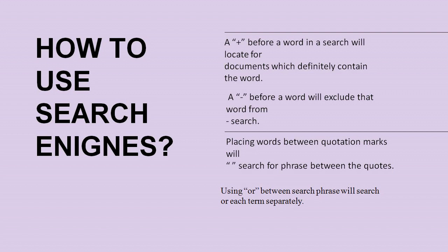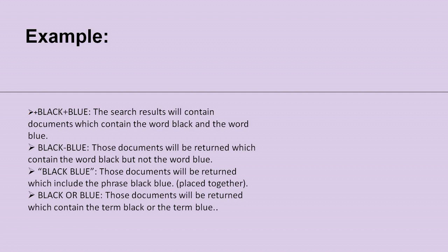For example, with keywords 'black' and 'blue': typing '+black +blue' returns documents containing both words. Typing 'black -blue' returns documents containing 'black' but not 'blue'. Typing 'black blue' in quotation marks returns documents containing the exact phrase 'black blue' together. Typing 'black OR blue' returns documents containing either the term 'black' or the term 'blue'.